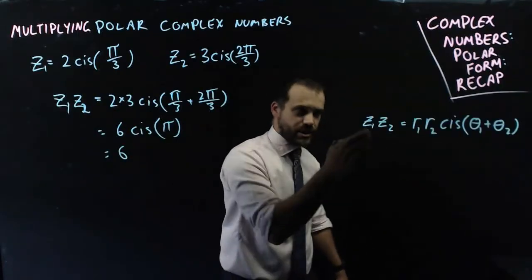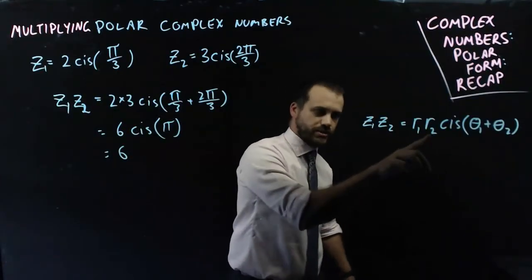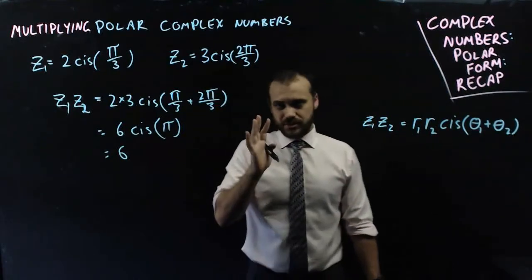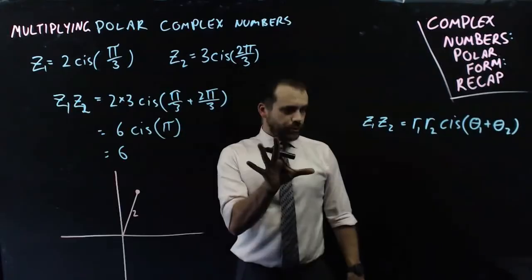Now, I really just need to tell you the formula. z1 times z2 equals r1 times r2, cis theta1 plus theta2. And we've got something special or similar for division. But before I get there, I want to talk to you about the geometric interpretation of multiplying complex numbers.